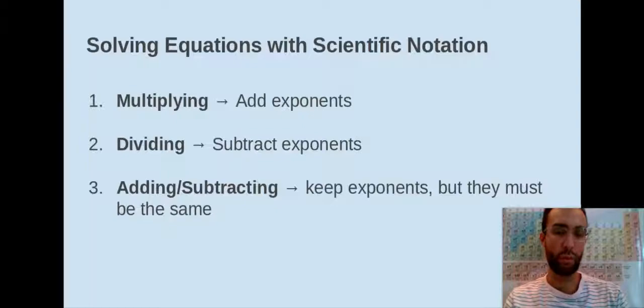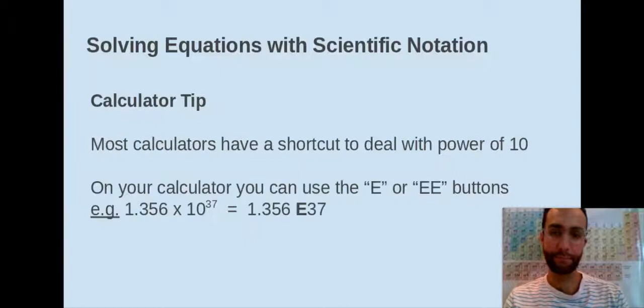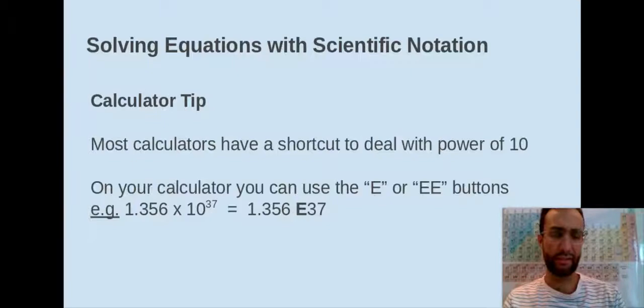We'll start with multiplying, but before we do that, let's take a look at a little calculator tip. Most calculators have a shortcut to deal with the power of 10. On your calculator, you might see a capital E or a capital EE button. If you press that, it takes the place of times 10. So you can simply type in 1.356E37 and we'll know exactly what you're talking about — a shortcut so you don't have to type in the multiplication, then 10, then the caret button.